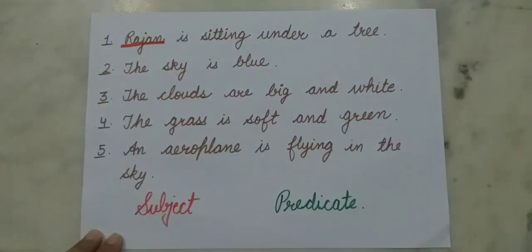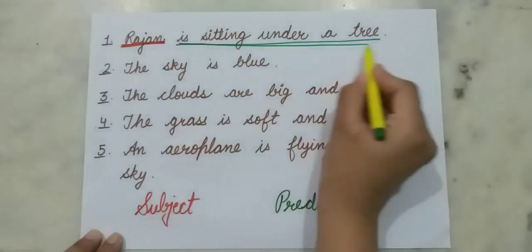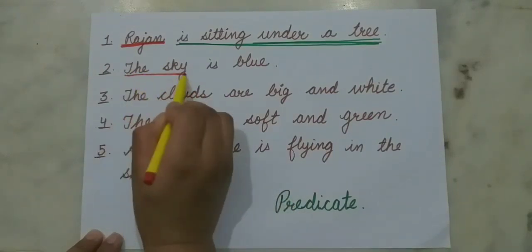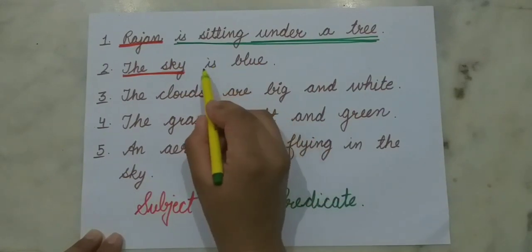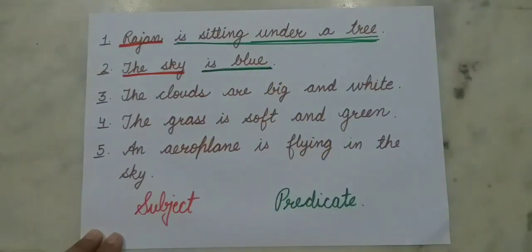What action is Rajan doing? He is sitting under a tree. So 'is sitting under a tree' is our predicate. The second sentence: 'The sky is blue.' Here, we are talking about the sky, so the sky is our subject. Whereas 'is blue' — we are talking about the sky, that it is blue — so this is the predicate.